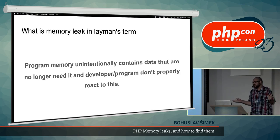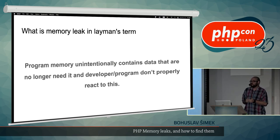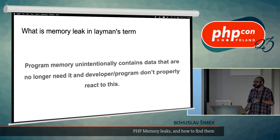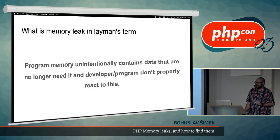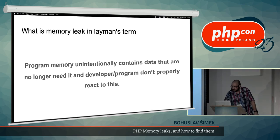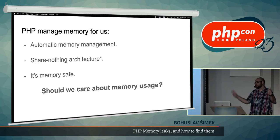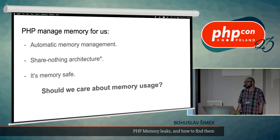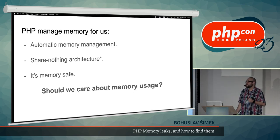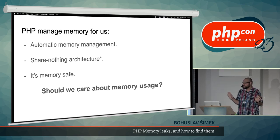There are multiple definitions of memory leaks. My favorite is this one: a memory leak is when a program's memory unintentionally contains data that are no longer needed, and the developer or program doesn't properly react to this. This can be rather confusing in the context of PHP, because PHP manages memory for us — it has automatic memory management, so you actually cannot allocate or deallocate memory by hand.